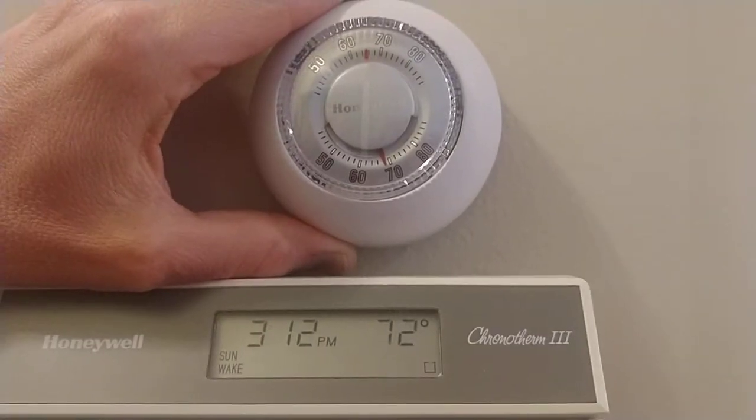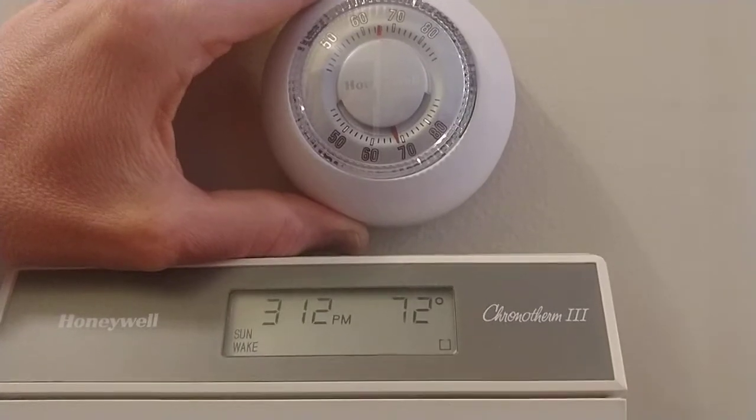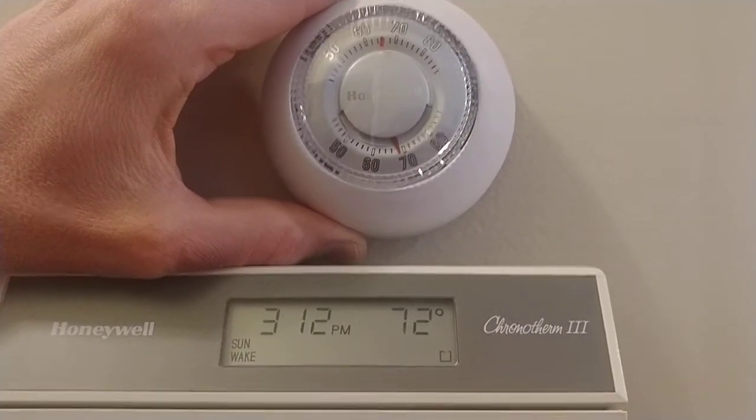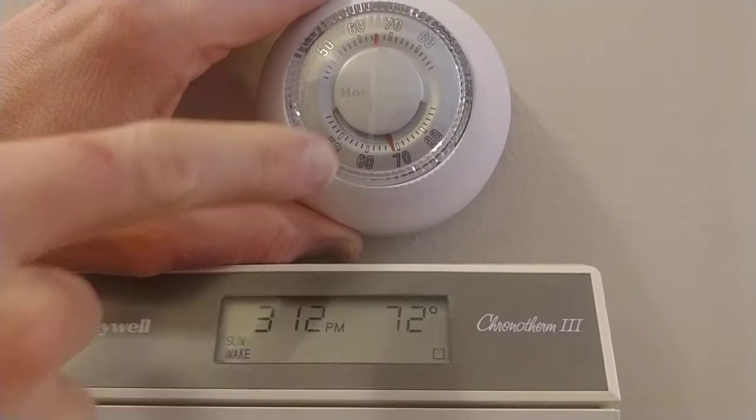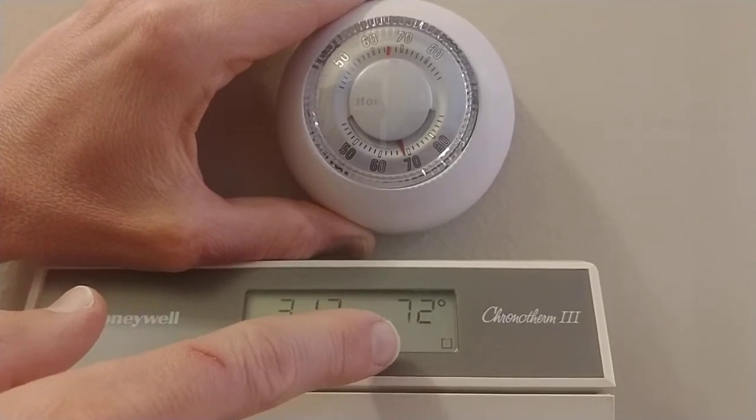I just want to make a quick video about how to adjust your Honeywell round thermostat if you're having an issue like this where you can see the Honeywell is reading 68 degrees but it's actually 72 in the house.